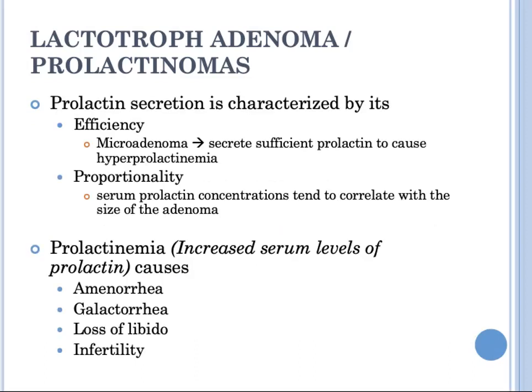Prolactin secretion by functioning adenomas is usually efficient and proportional. Microadenomas can secrete sufficient prolactin to cause hyperprolactinemia, and serum prolactin concentration tends to correlate with the size of the adenoma. Increased serum levels of prolactin cause amenorrhea, galactorrhea, loss of libido, and infertility.